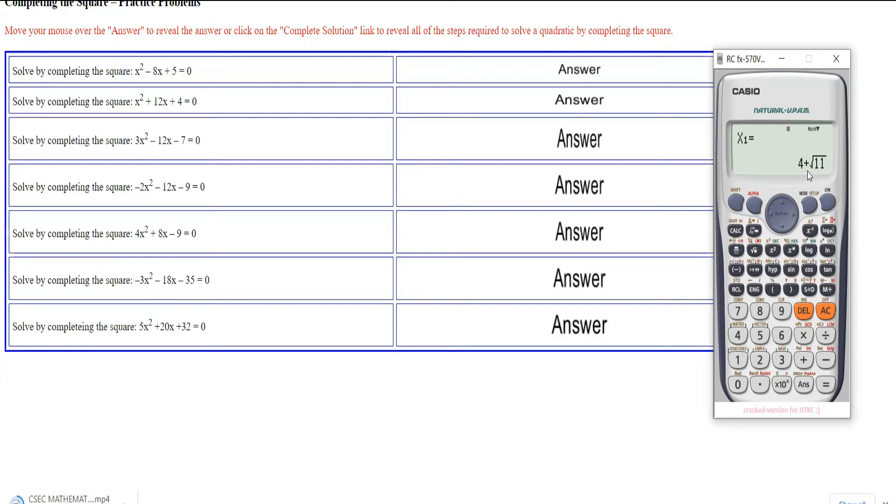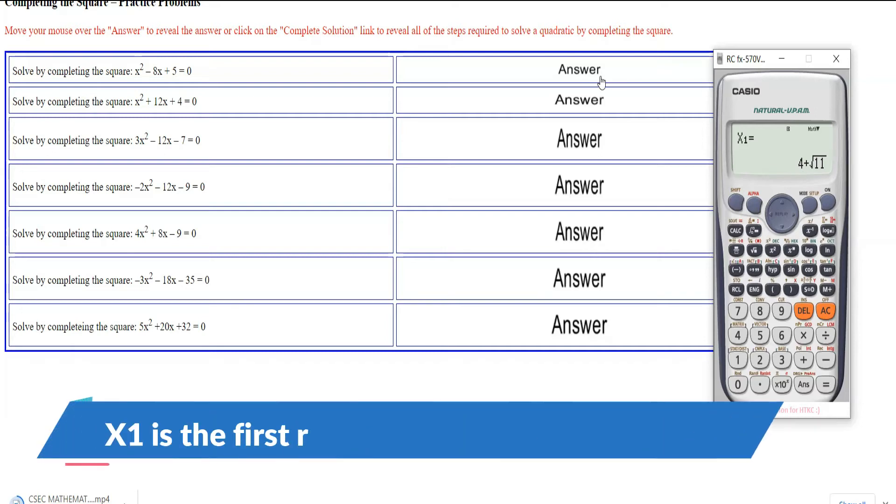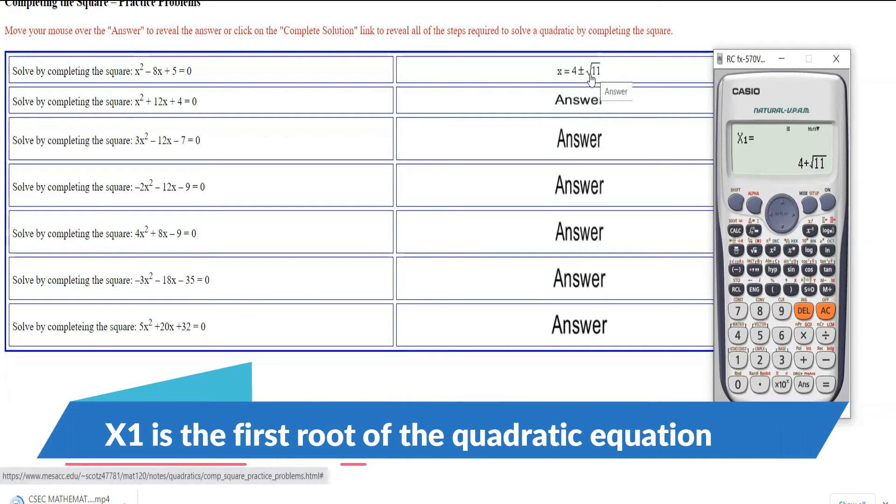It will give you the answers, meaning it solves the equations first. Because if we click this, it says x is 4 ± √11. So this is giving us the solution to the equation.